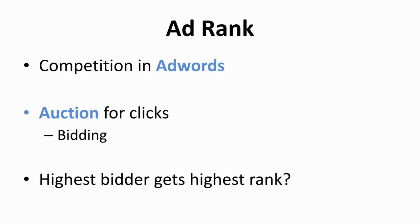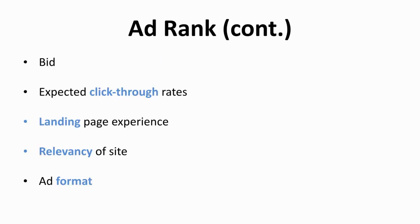The calculation of Ad Rank is the combination of your bid, expected click-through rates, landing page experience, relevancy of site, and ad format. The expected click-through rate is determined by Google based on their prediction on how many clicks they expect to send to your site — you can't really control this, but you can increase it by choosing the right keyword. The landing page experience is another important factor — your landing page must contain relevant and original content, be easy to navigate, and show transparency of your business.